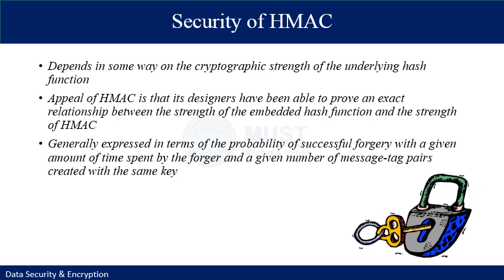The security of HMAC depends on the cryptographic strength of the underlying hash function. Designers have been able to prove an exact relationship between the strength of the embedded hash function and the strength of HMAC, generally expressed in terms of the probability of successful forgery given a certain amount of time and a given number of message-tag pairs created with the same key. The probability of a successful attack on HMAC is equivalent to one of two attacks on the embedded hash function: the attacker computes an output of the compression function even with a random secret unknown initialization vector, or the attacker finds a collision in the hash function even when the initialization vector is random and secret.